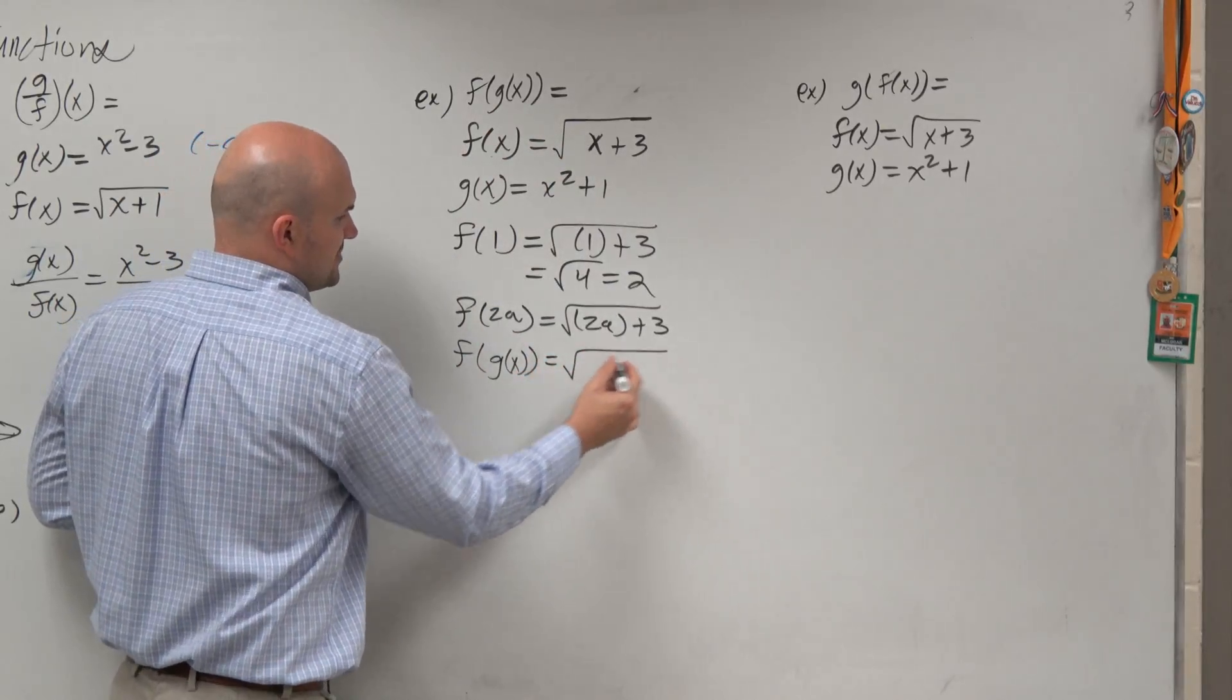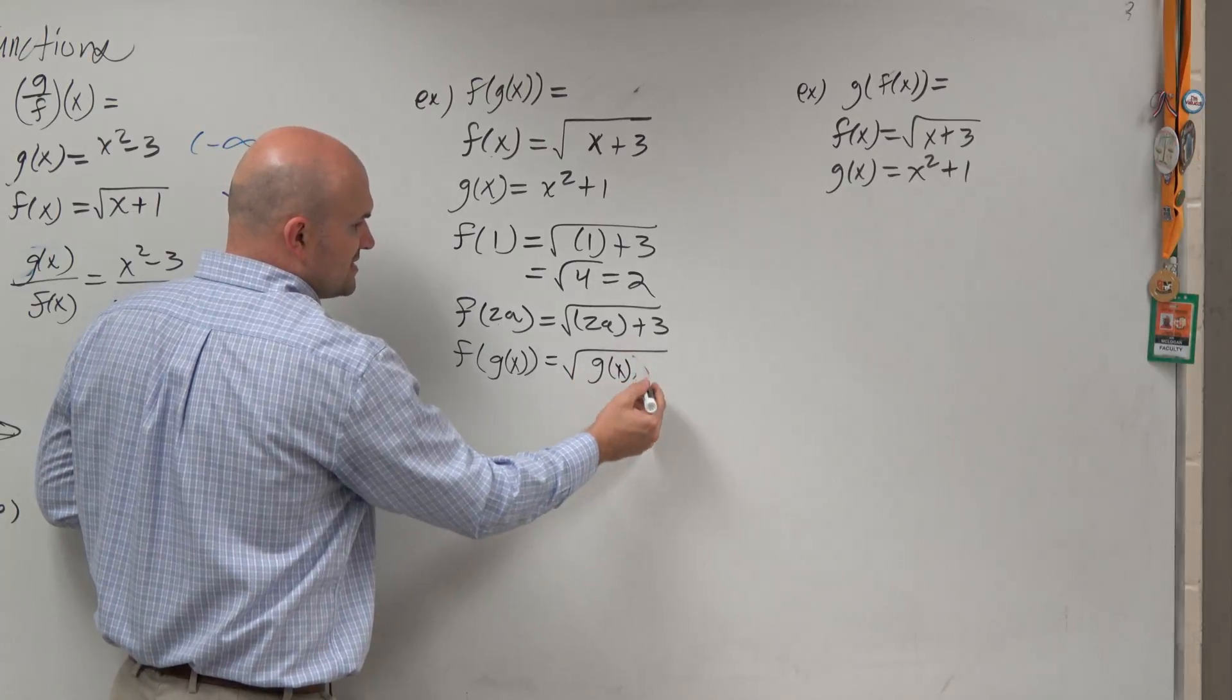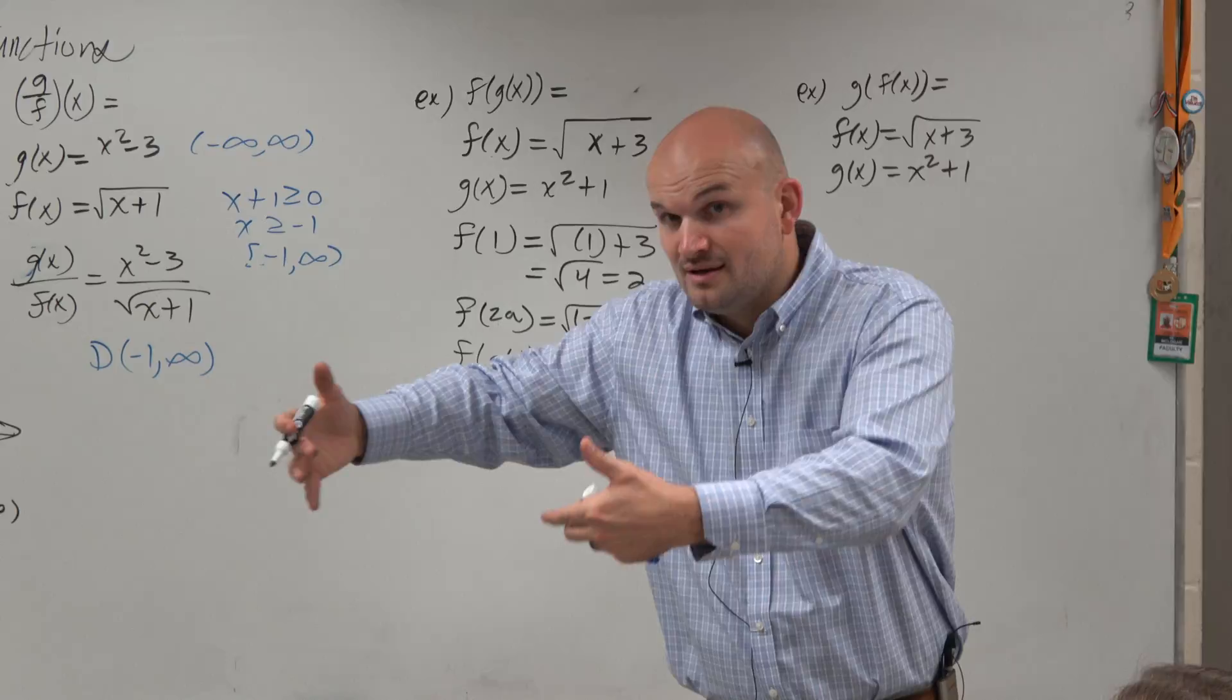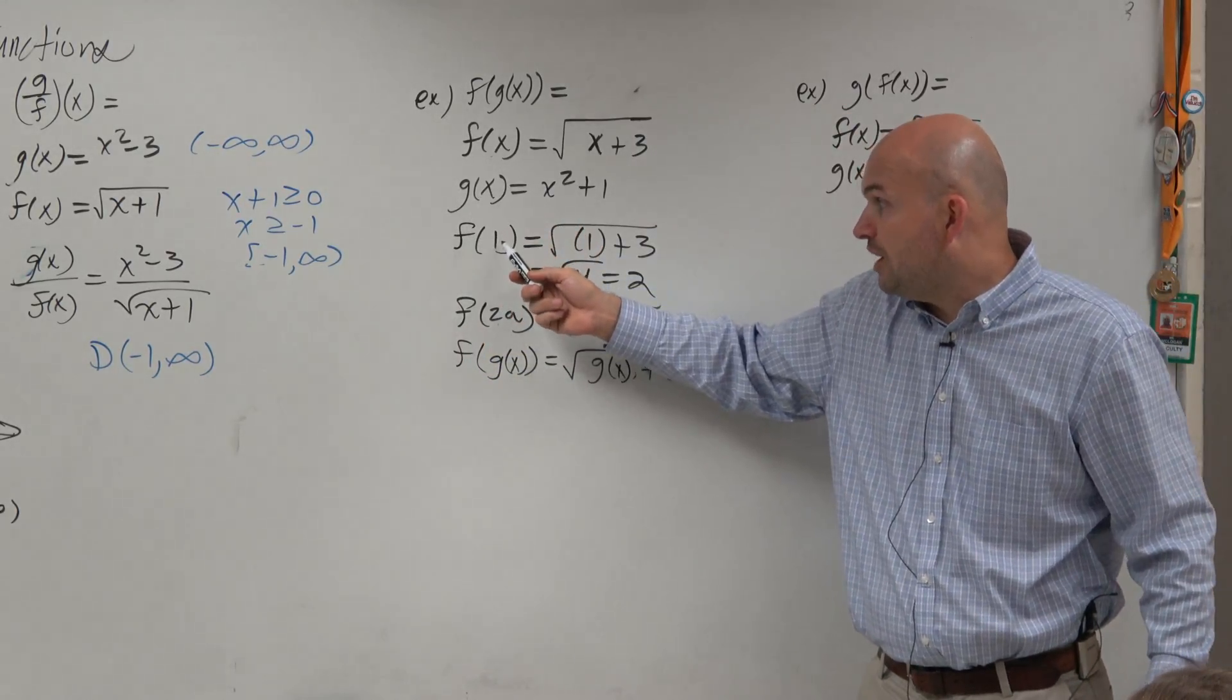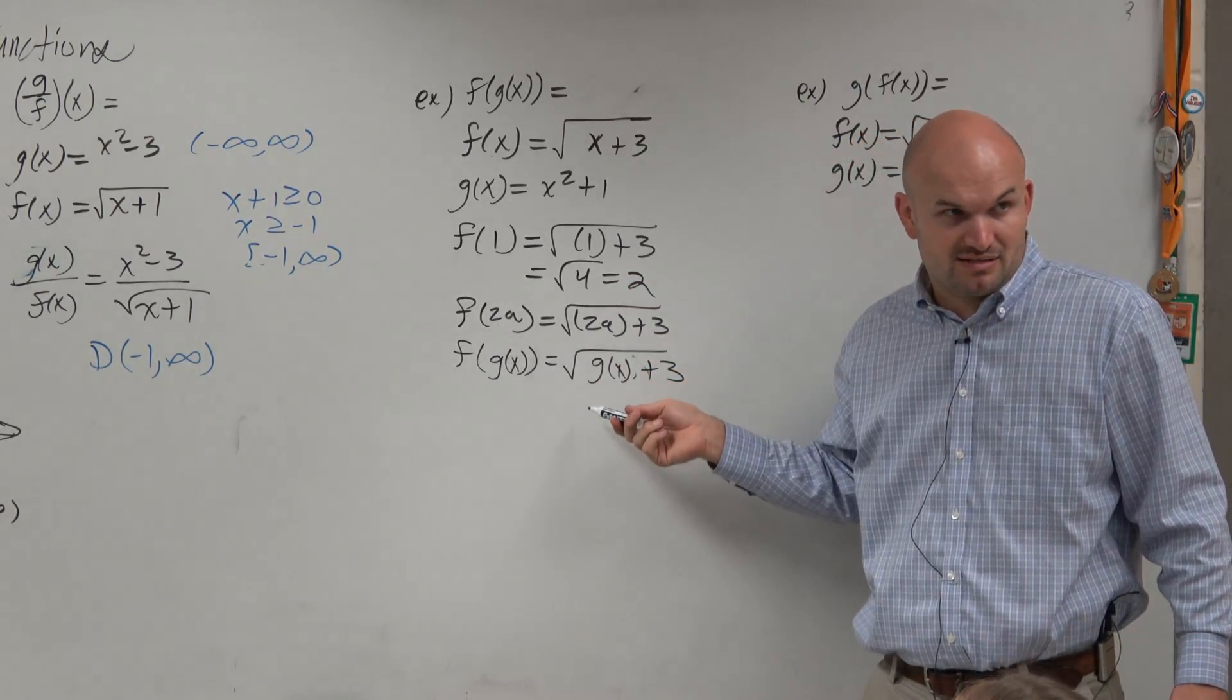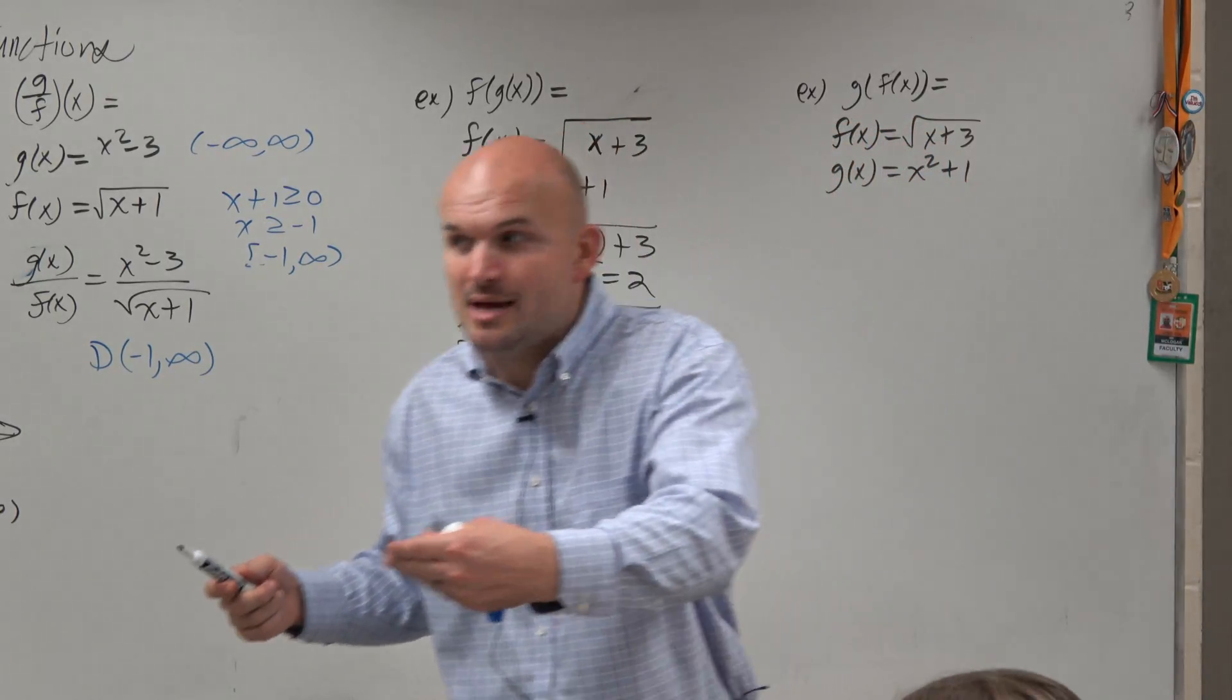You might think, 'That's weird, Mr. McLogan. I like numbers, not letters.' But do you see the pattern? Whatever I have f of, I'm replacing x with that. If this is f of 1, I replace x with 1. For f of g of x, I'm replacing x with g of x. Does everybody see that substitution pattern?